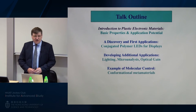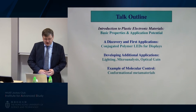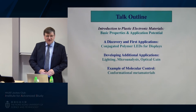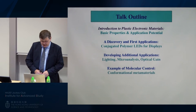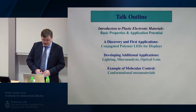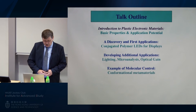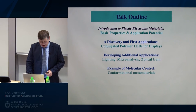I'd like to give a brief introduction to plastic electronic materials, describe some of their basic properties and application potential. I'll spend probably the bulk of the talk on the particular discovery of the conjugated polymer light-emitting diode, then say a little about lighting and briefly microanalysis and gain. Finally, I'd like to give an example of some recent research where we're looking at the opportunity to use molecular control to fabricate structures of interest for photonic applications.